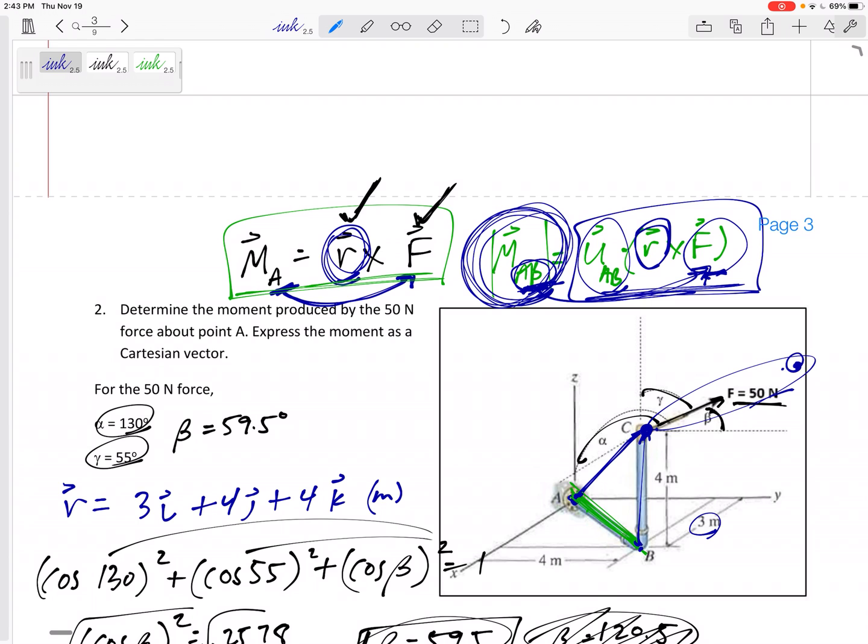Just like F equals F times U, M equals M times U. So you take that U that you found, and you multiply it times the U in order to get the total moment. That's a moment about an axis.